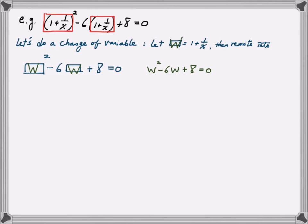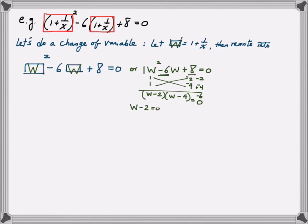Let's factor w² - 6w + 8 = 0. Factors of 8 are 2 and 4; since 1×4 + 1×2 = 6, and we need negative 6, both factors need a negative sign, giving us (w - 2)(w - 4) = 0. By the zero product property, either w - 2 = 0, giving w = 2, or w - 4 = 0, giving w = 4.